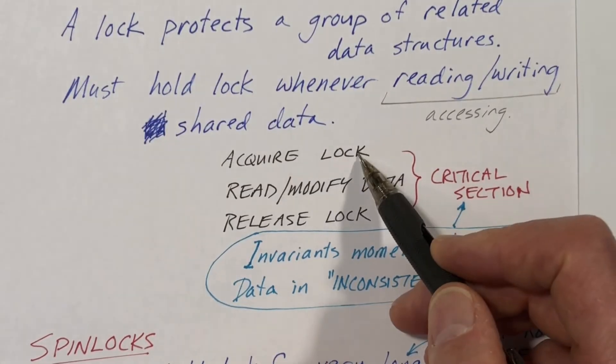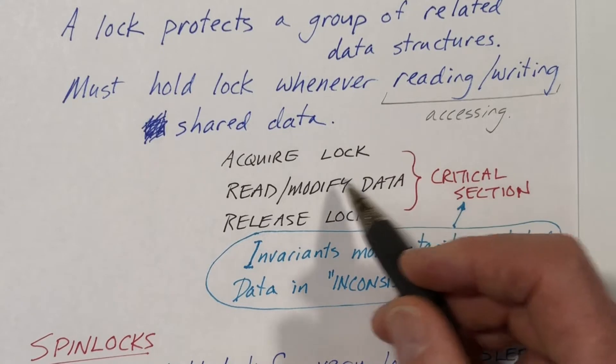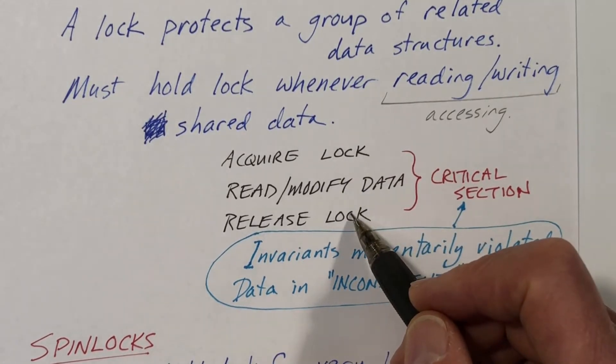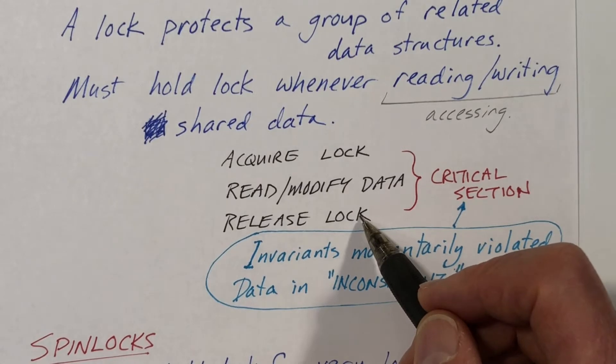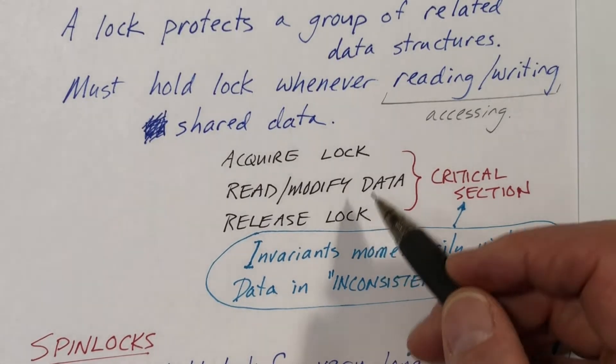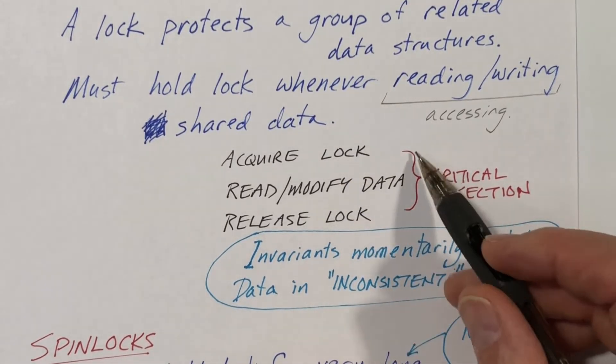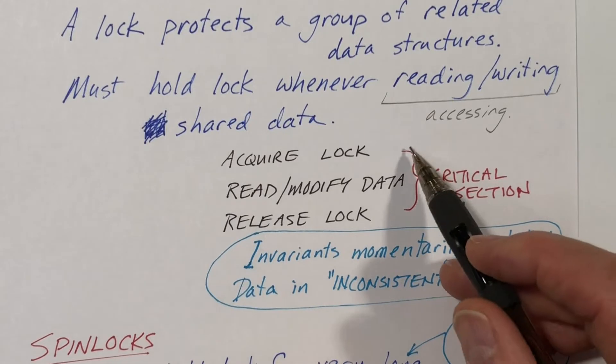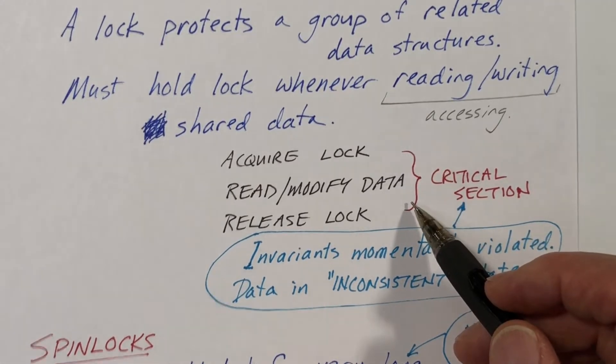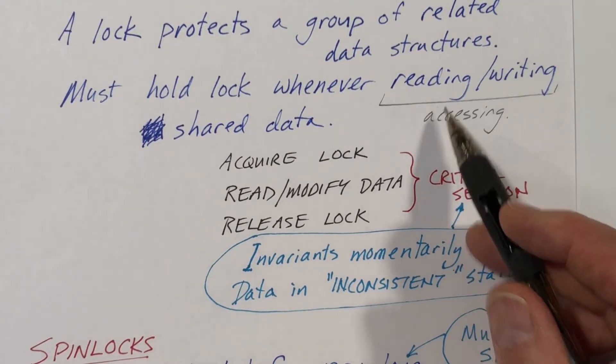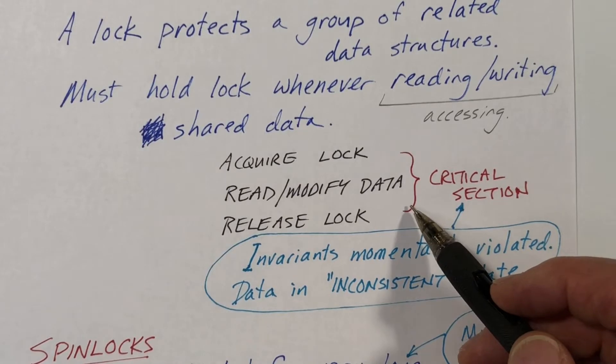We need to do an acquire operation before we read or modify the data, and then after we are done with the shared data, we need to release the lock so that others can access the shared data. So the time between the acquire and the release is often called the critical section, and that's where we are allowed to access the shared data, and we must not access the shared data. Even reading it is dangerous. We must not access the shared data outside of the critical section.